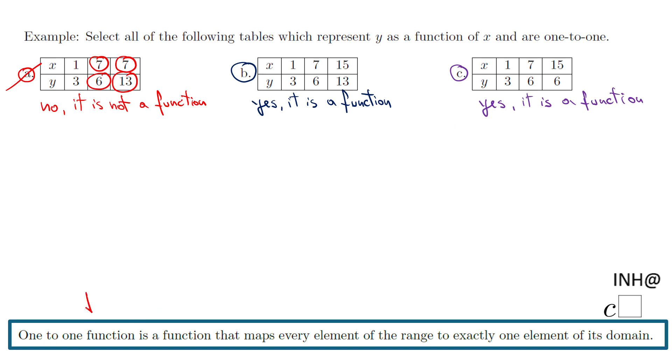Let's take a look at this last part here. A one-to-one function is a function that maps every element of the range to exactly one element of its domain. The bad thing is here, if you notice, this element in the range, six, is matched to two different values in the domain, so this is not a one-to-one function.